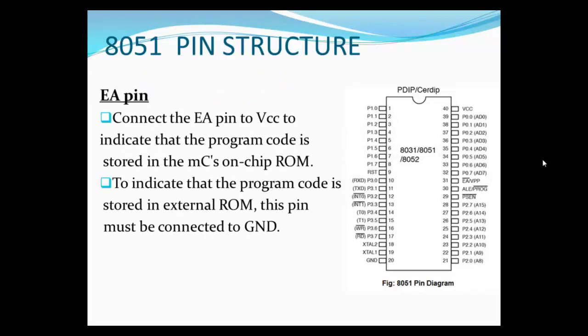This is the 8051 pin structure. The most important pin needed for this interfacing is the EA pin. It is active low and is at pin 31. To indicate that the program code is stored in the on-chip ROM, this pin is connected to VCC. To indicate that the program code is stored in external ROM, this pin must be connected to ground.